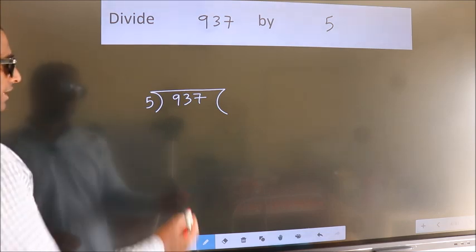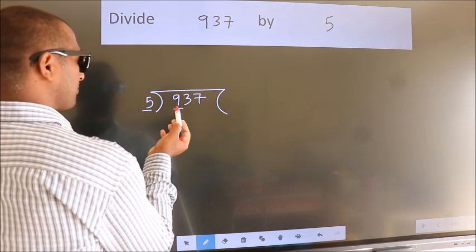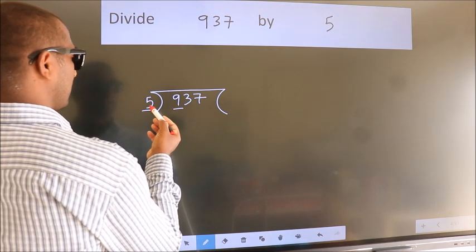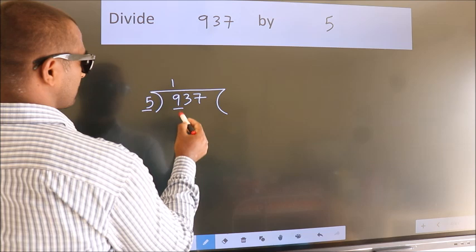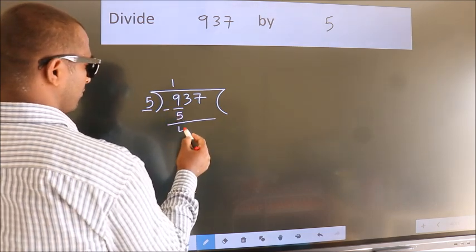Next, here we have 9, here 5. A number close to 9 in the 5 table is 5 times 1 is 5. Now we should subtract, we get 4.